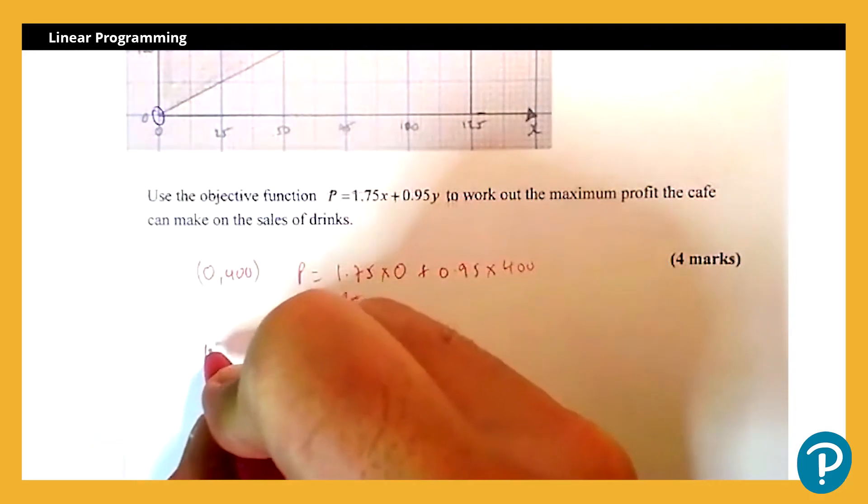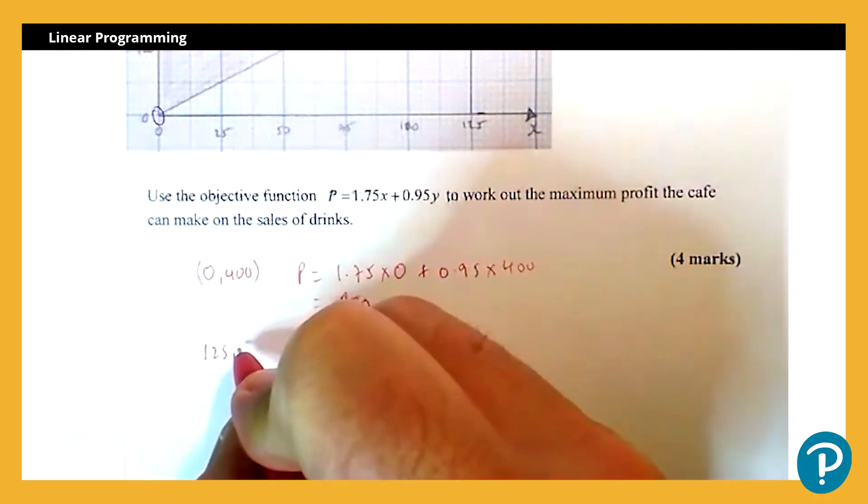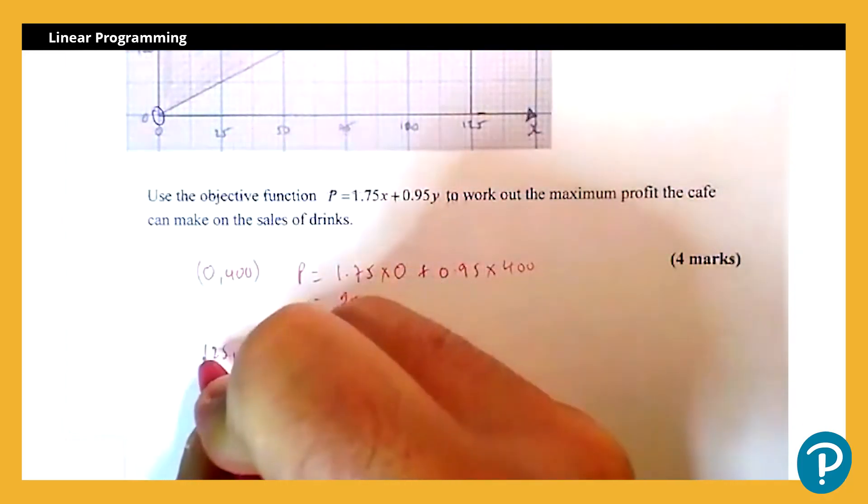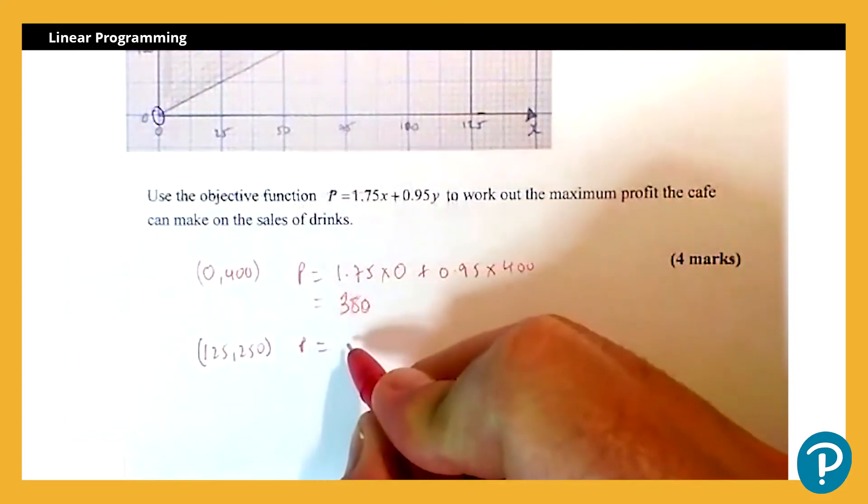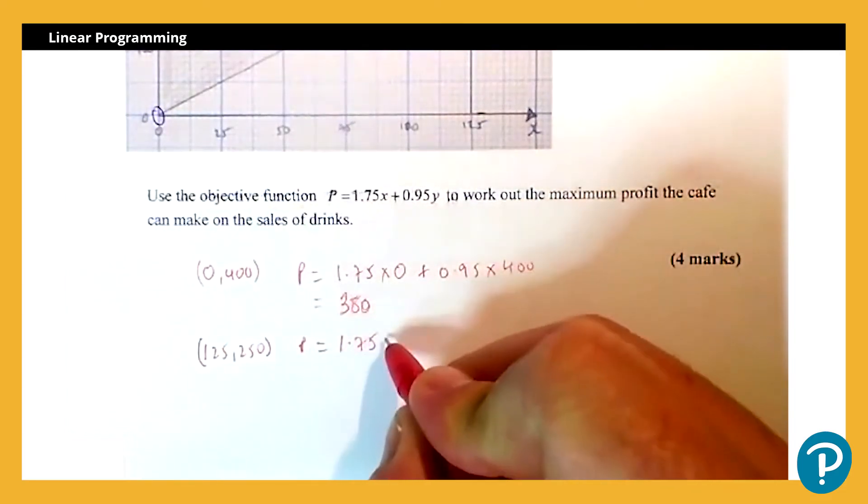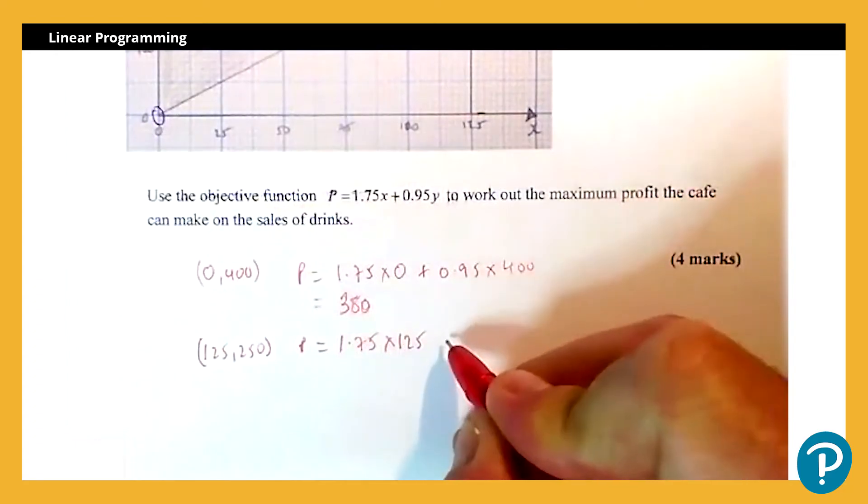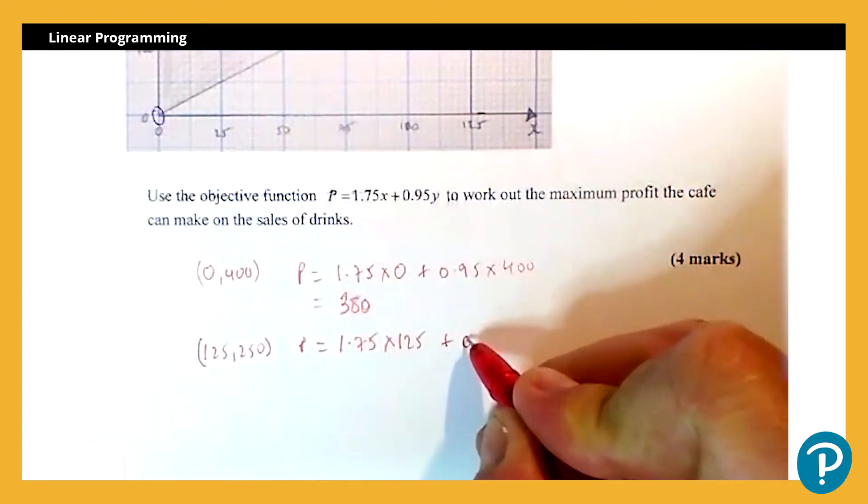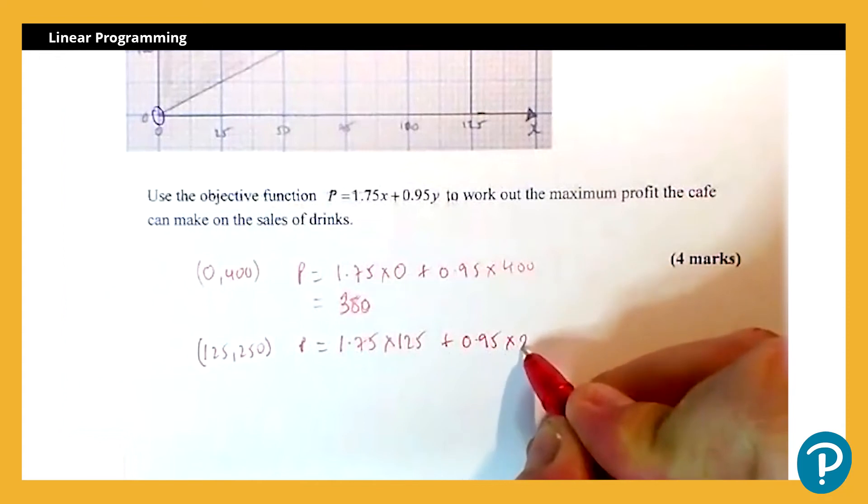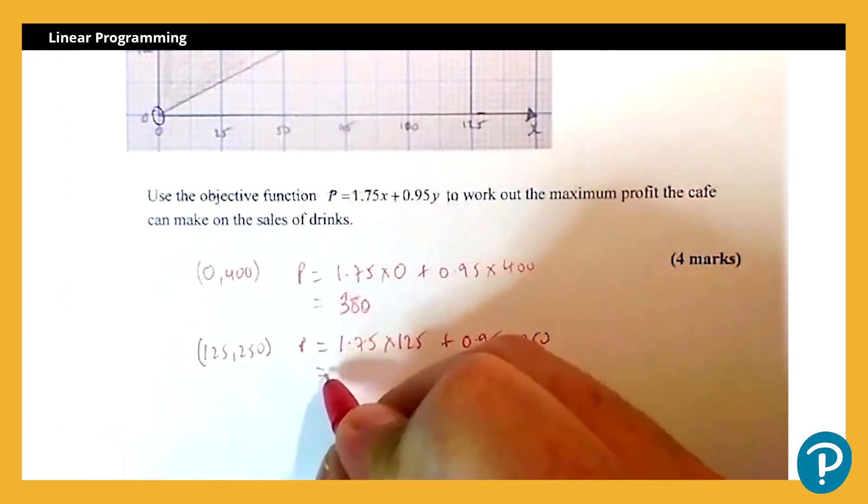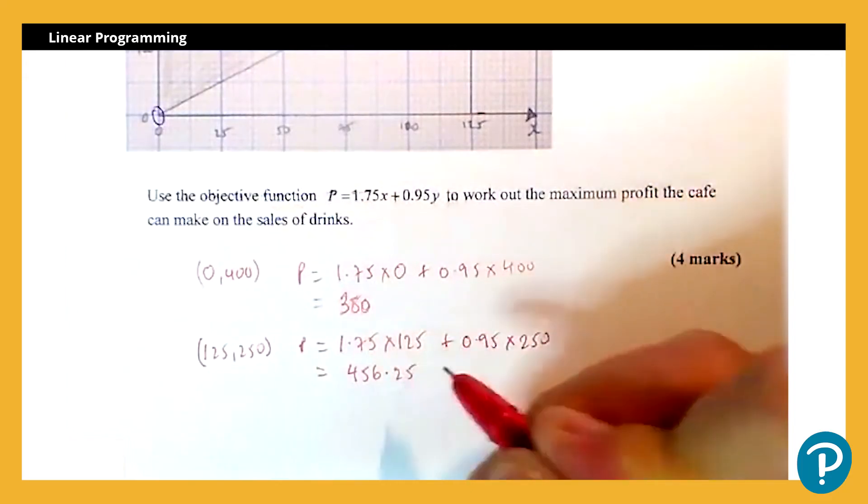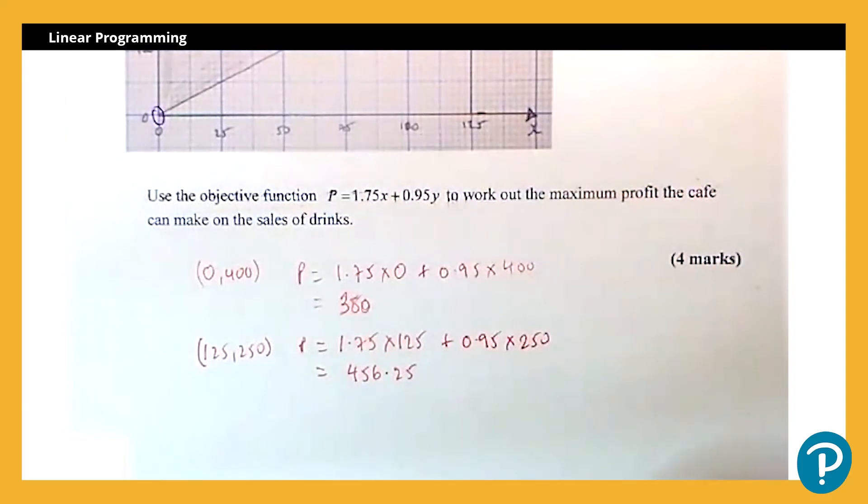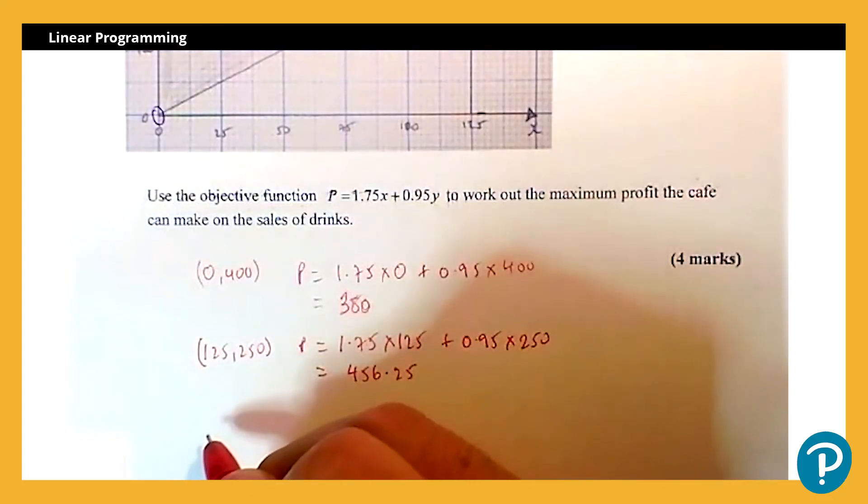If I then look at the next coordinate which is (125, 250), that's going to give me P = 1.75 times 125 plus 0.95 times 250. That one works out at 456.25p.